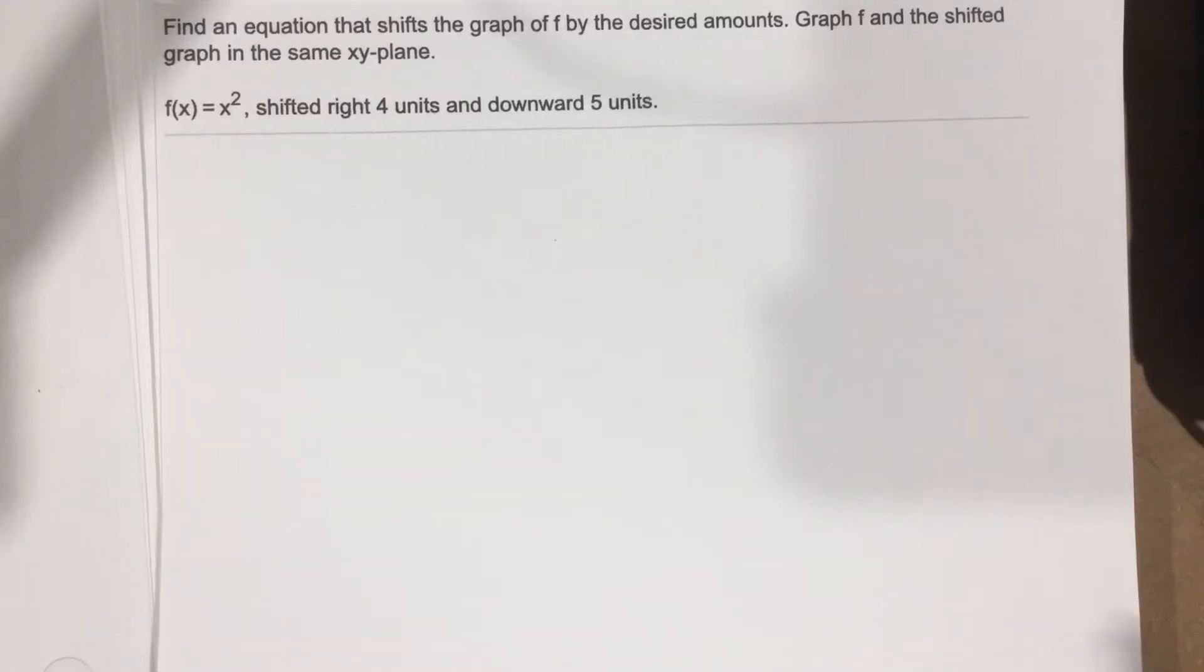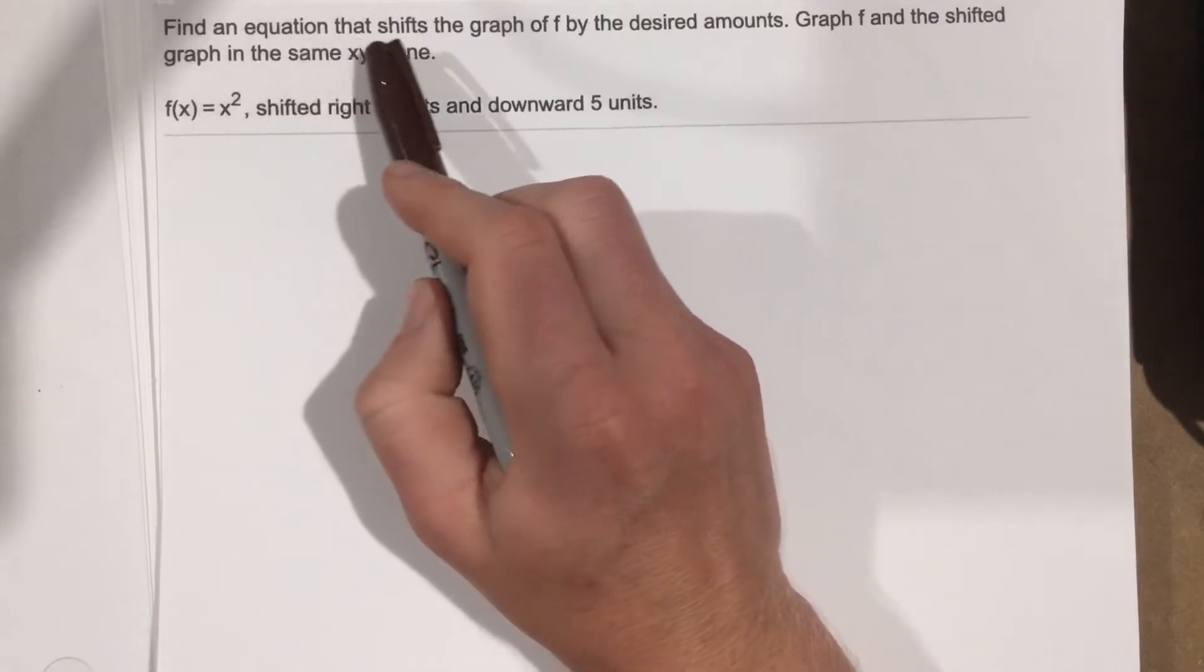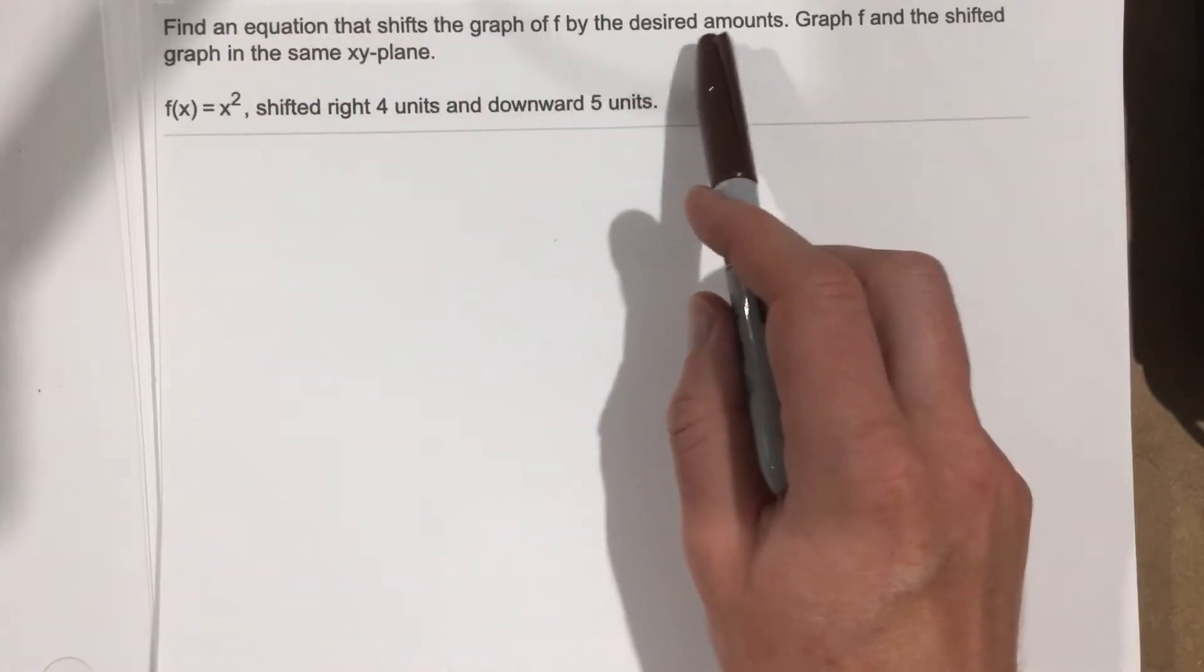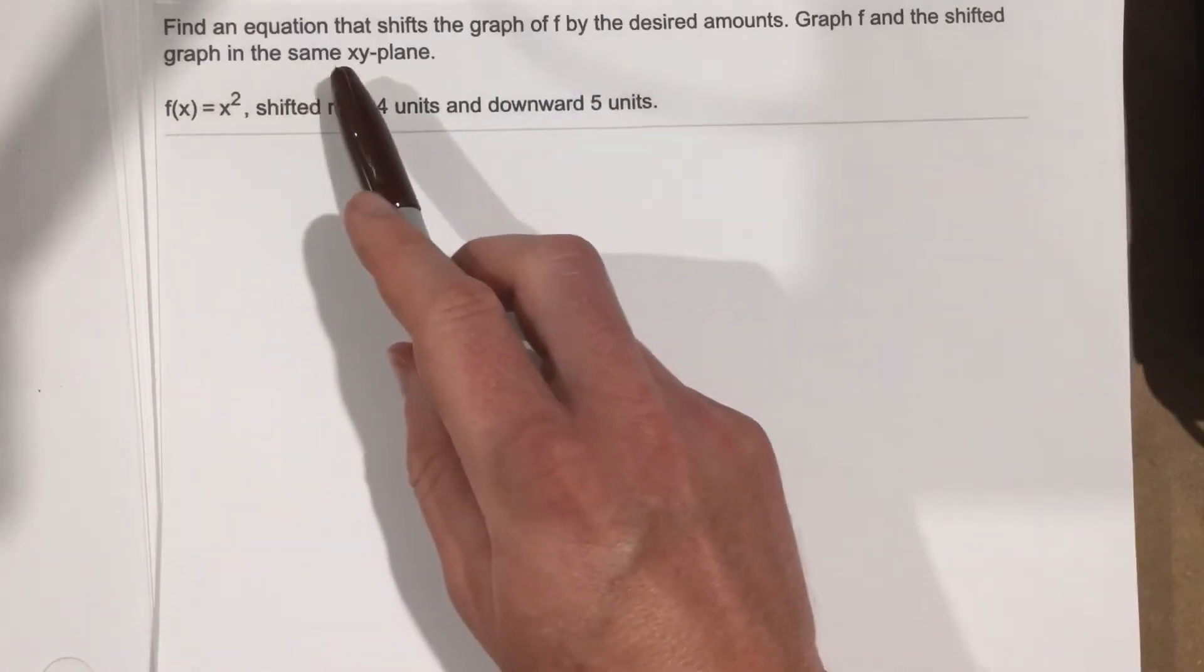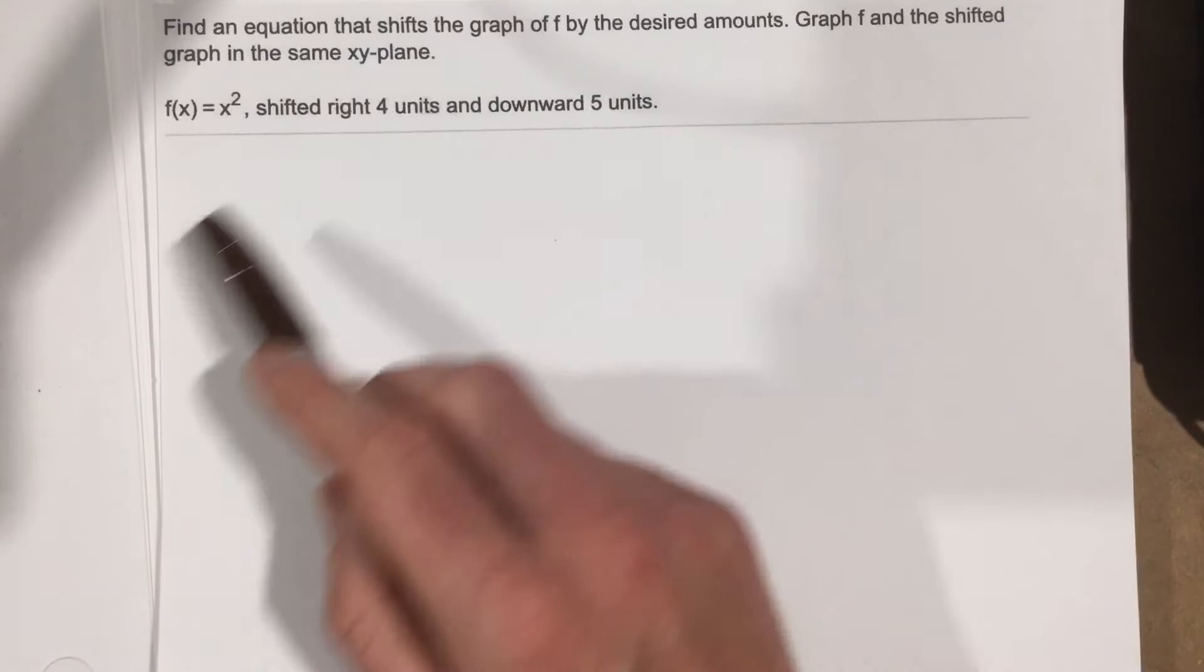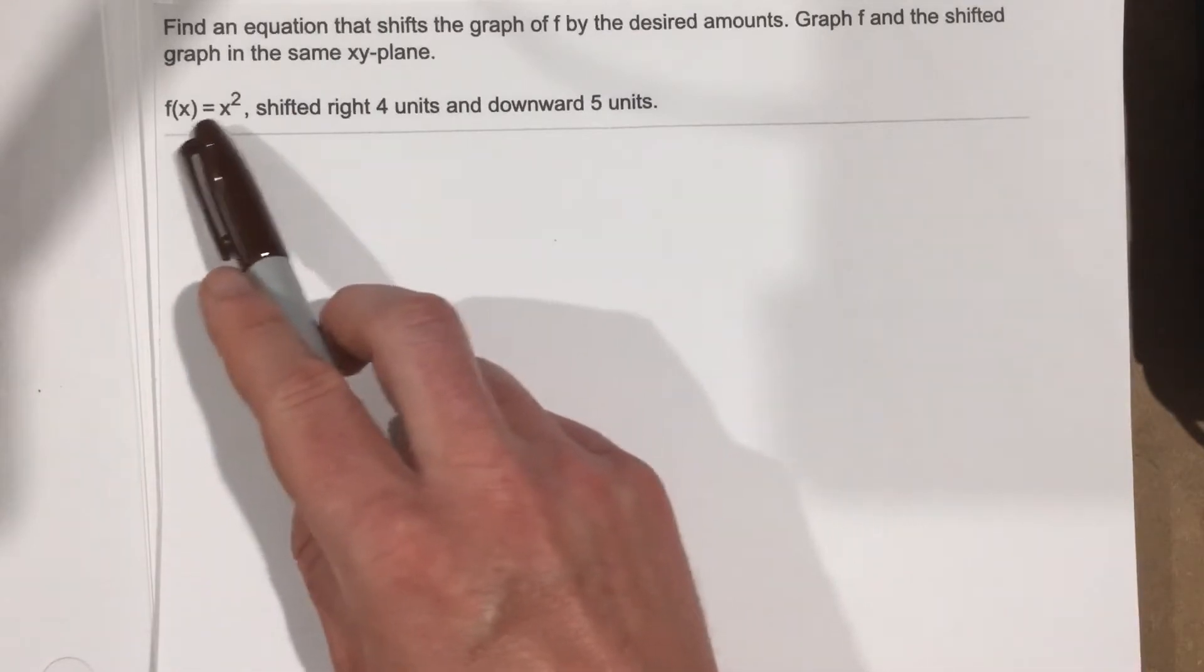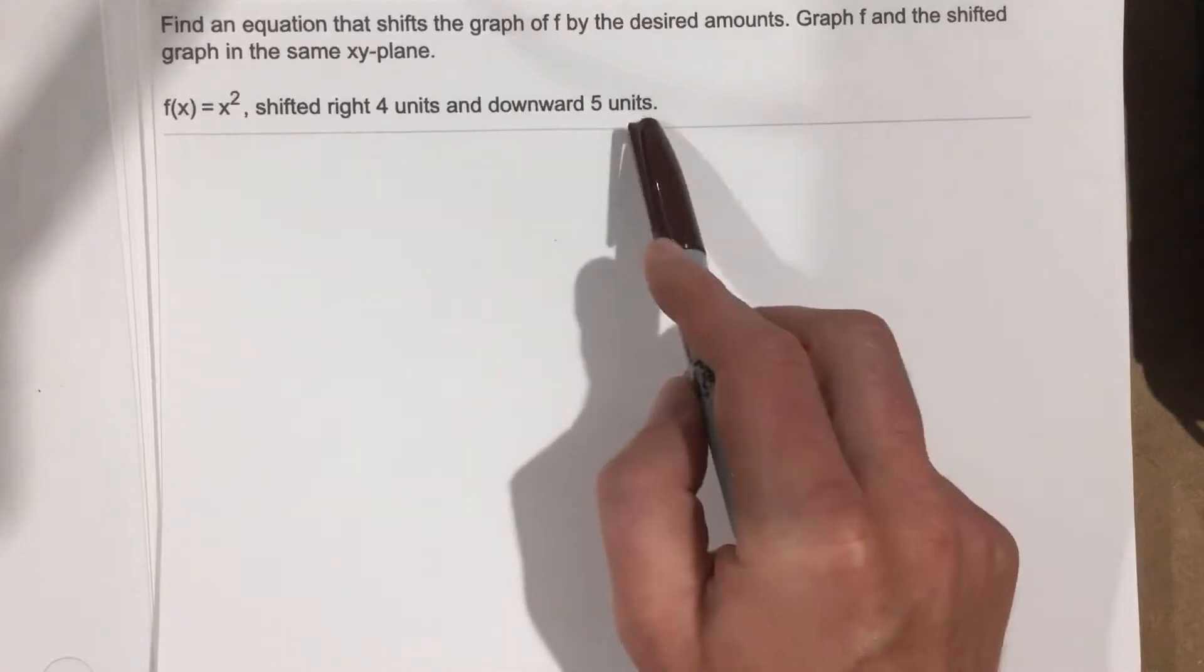This is problem number one from section 3.5. In this problem it says find an equation that shifts the graph of f by the desired amounts. Graph f and the shifted graph in the same plane. We want to graph f and the shifted graph in the same x-y plane. The x-squared function needs to be shifted right 4 units and downward 5 units.